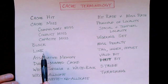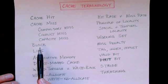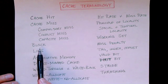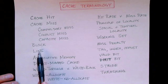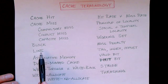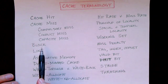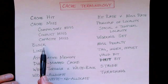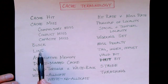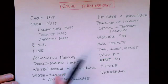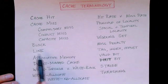The line is bigger than the block because the line contains a block of data as well as the tag and other information. When we talk about the size of caches, we talk about the amount of block data that's in the cache — the tags and other bits are not included.